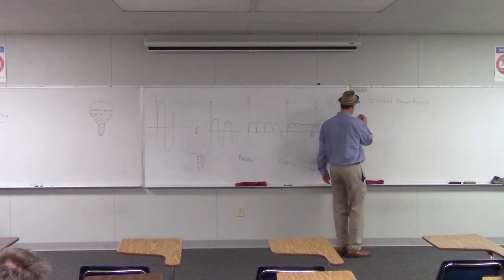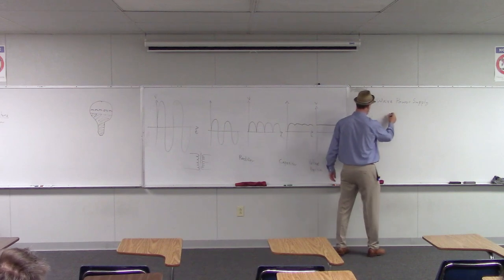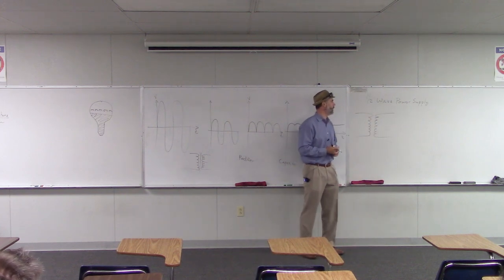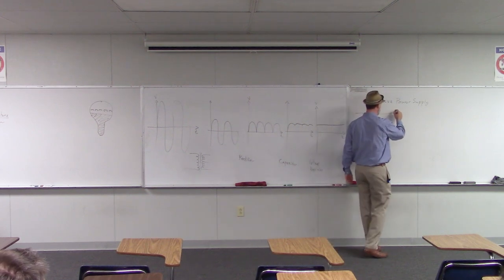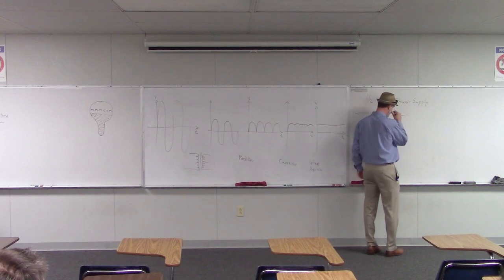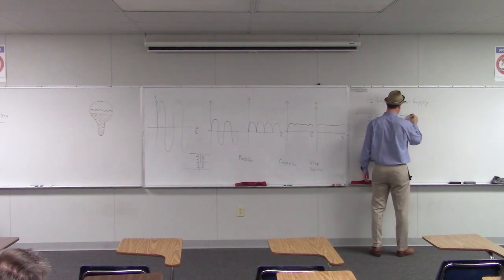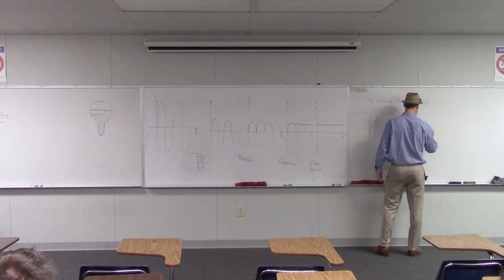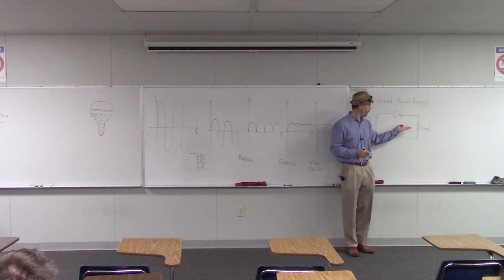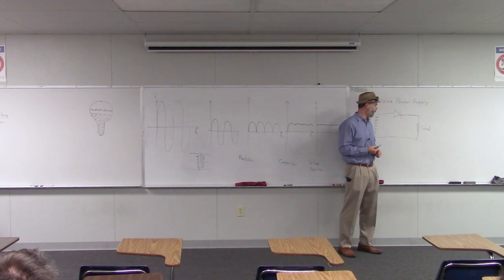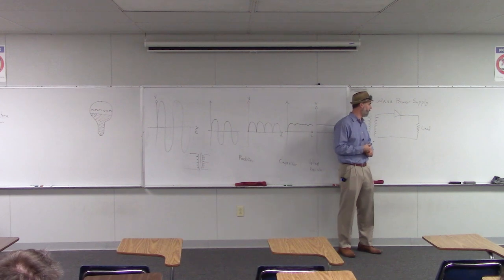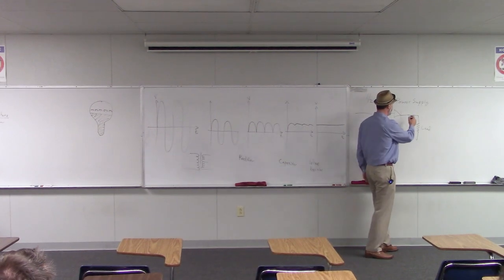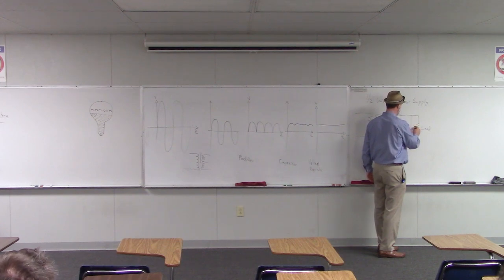The half-wave power supply starts with the transformer. The component used for the half-wave rectifier is just a single diode - one diode. This was the simplest type of power supply because it only used a single diode for its rectifier. We had the diode and then the load over here - whatever we're trying to power, like a cell phone or computer. If we wanted to do some smoothing, we would put a capacitor in parallel with the load.